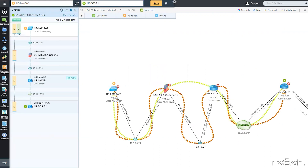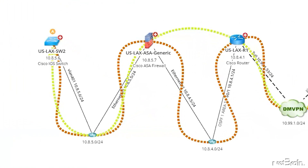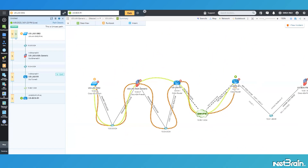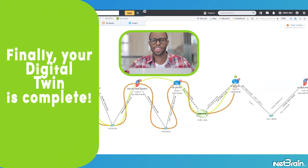With my Cisco ASA firewall virtually back in place, I can take my time to build out the rest of the interfaces, connections, and routes as time permits. My map looks a whole lot more complete and is now ready to help me troubleshoot. As you just saw, generic devices are a great way to quickly plug the holes in your NetBrain maps.